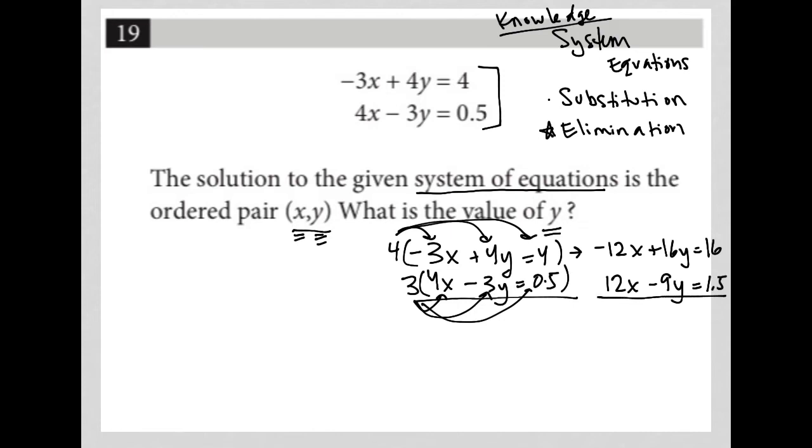Now when I add these equations together, this is where the elimination step is because my -12x plus a positive 12x eliminates the x value. 16y minus 9y is 7y. I should have said 16y plus a negative 9y, because I'm adding this equation. 16y plus a negative 9y is positive 7y.